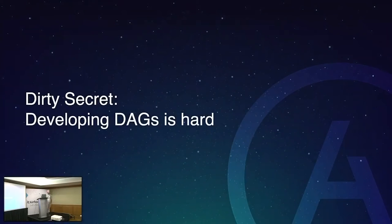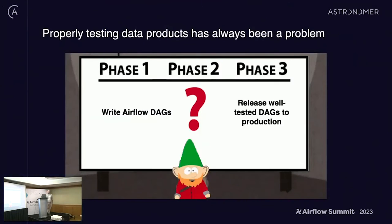Dirty secret: developing DAGs is hard. There seems to be a missing middle when it comes to developing DAGs. We all know the basic API for writing DAGs, and we all want these production-ready, well-tested DAGs that are actually touching our very important data. And there hasn't really been that much in terms of a story of how to get there.